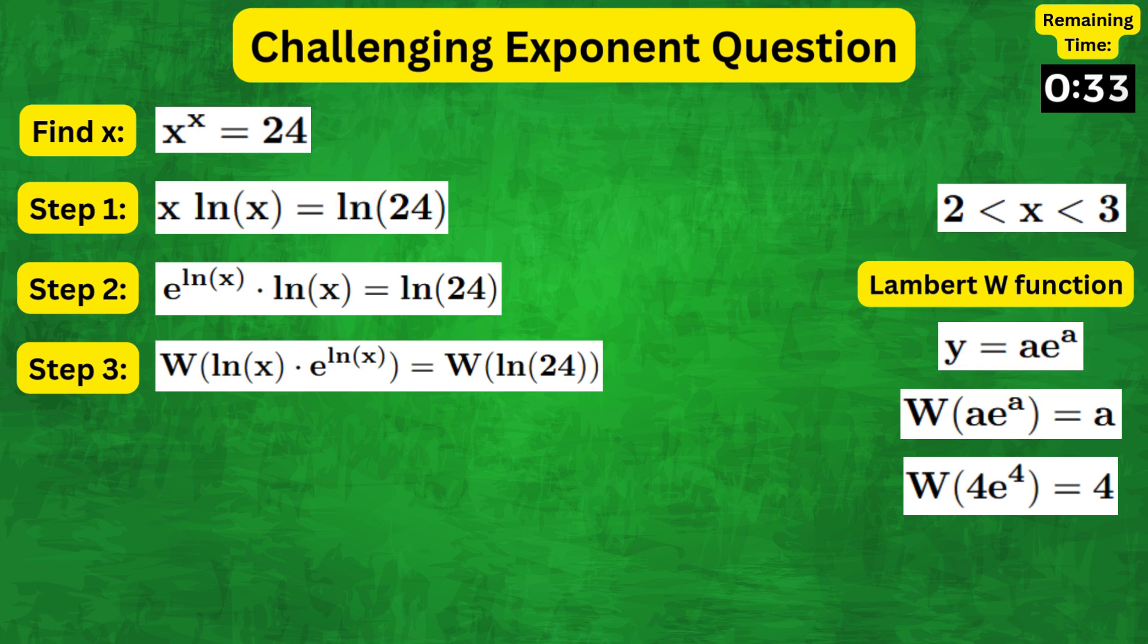Which yields natural log of x equals W of natural log of 24, where the right-hand side is simply a constant value.